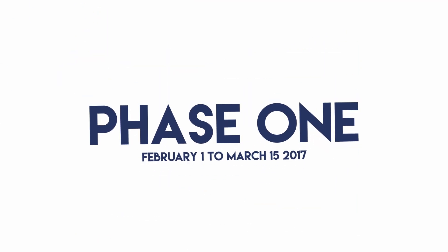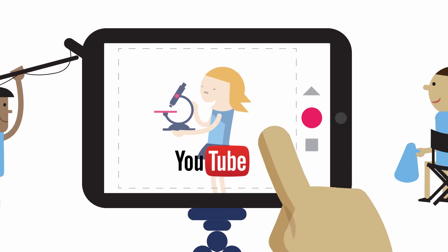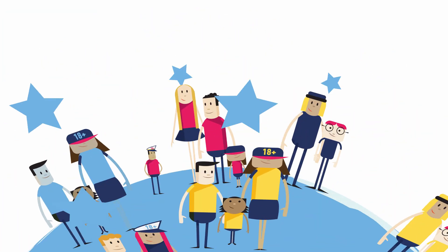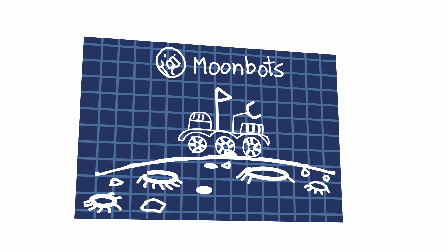In phase one, all you have to do is create a video presenting what you would leave on the moon as our legacy. Twelve teams will be chosen to move on to phase two, getting their own robotics kits to then design and program a rover to move over a lunar landscape.